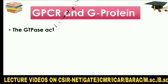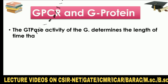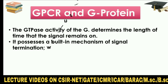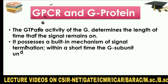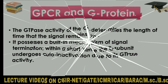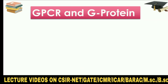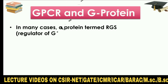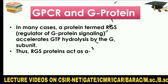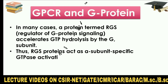The GTPase activity of G-alpha determines the length of time that the signal remains on. It possesses a built-in mechanism of signal termination. Within a short time, the G-alpha subunit undergoes auto-inactivation due to its GTPase activity. In many cases, a protein termed RGS — regulator of G-protein signaling — accelerates GTP hydrolysis by the G-alpha subunit. Thus, RGS proteins act as alpha subunit-specific GTPase activating proteins (GAPs).